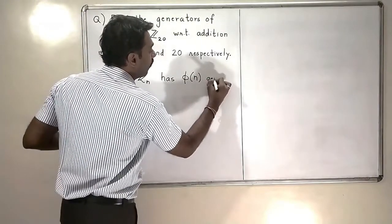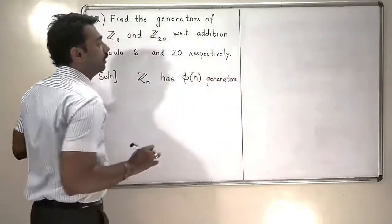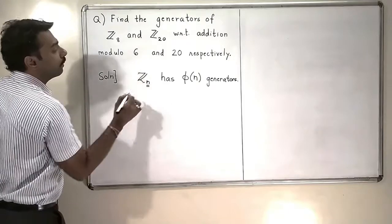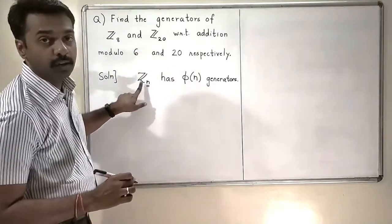Zn has phi of n generators, so I am going to use that particular result here directly. What are the numbers which are relatively primed to n? Those will become the generators of my particular set Zn.